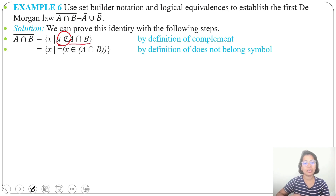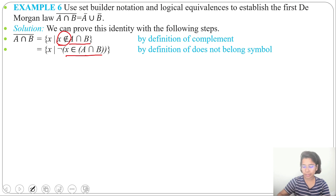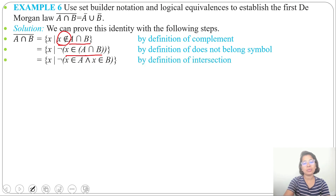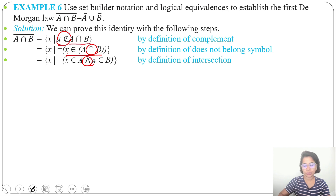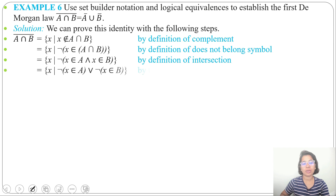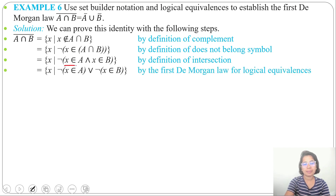We can write this using negation: ¬(x ∈ A ∩ B). Then according to the intersection property, we can write x ∈ A AND x ∈ B — where AND is from logic and intersection is from set theory. Now we can apply the first De Morgan's law of logical equivalence.